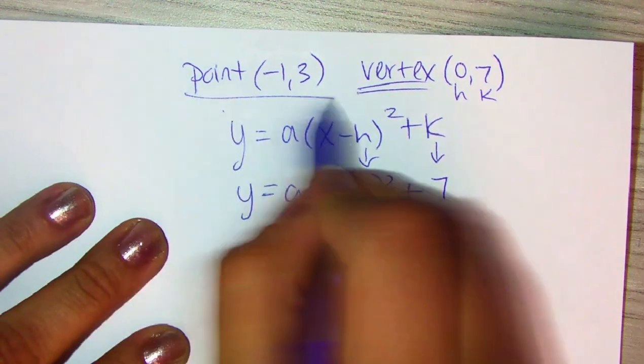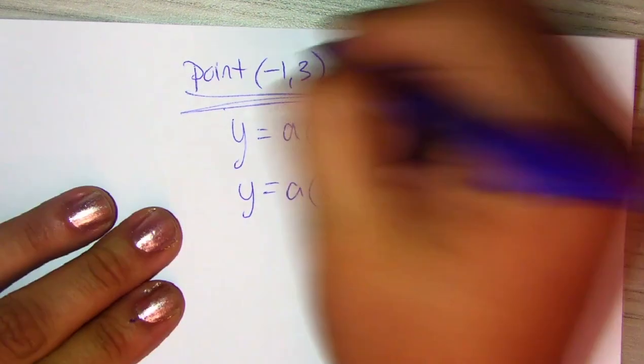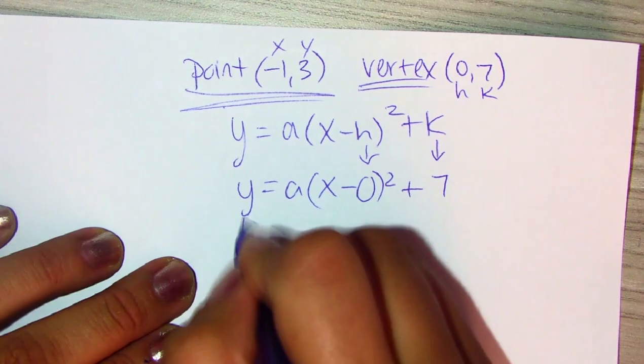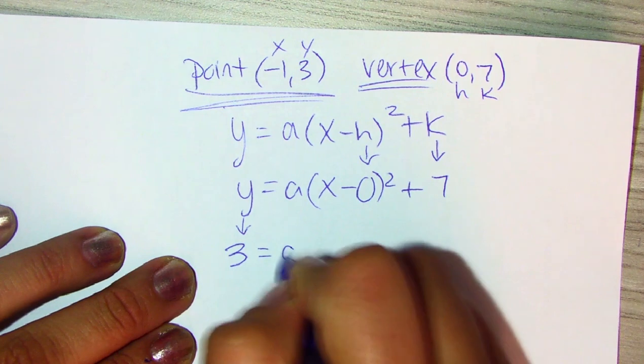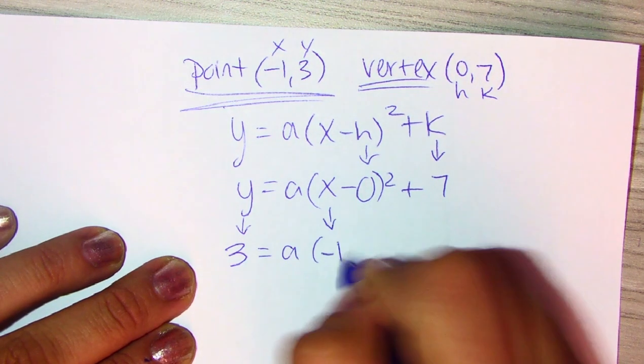If they give you a point, they're giving it to you for a reason. So, use it as XY. So, we're going to put 3 and then negative 1 right there.